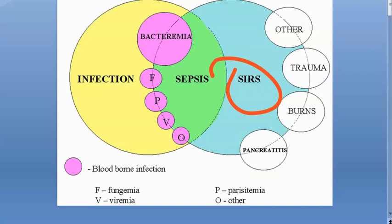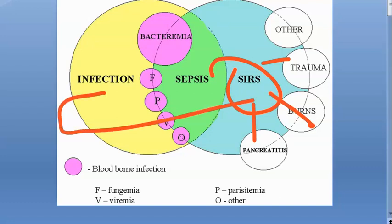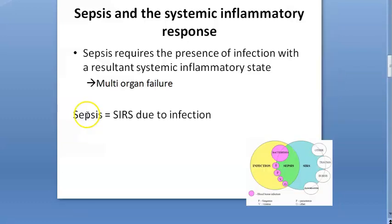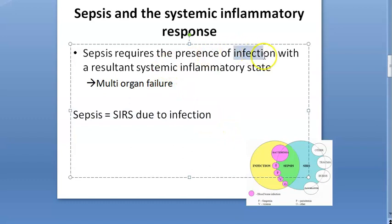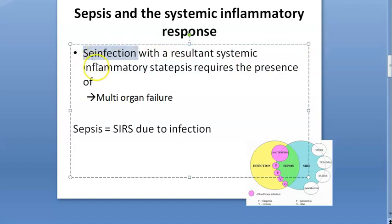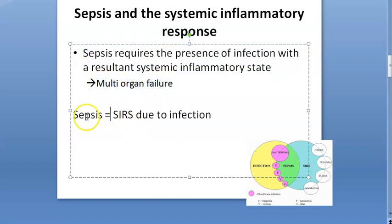SIRS is a Systemic Inflammatory Response. Inflammatory response can happen due to infection, trauma, burns, pancreatitis. But whenever it happens because of infection, that time you use the word sepsis. What is sepsis? Sepsis is SIRS due to infection. So infection with SIRS is sepsis. This further can lead to multi-organ failure.